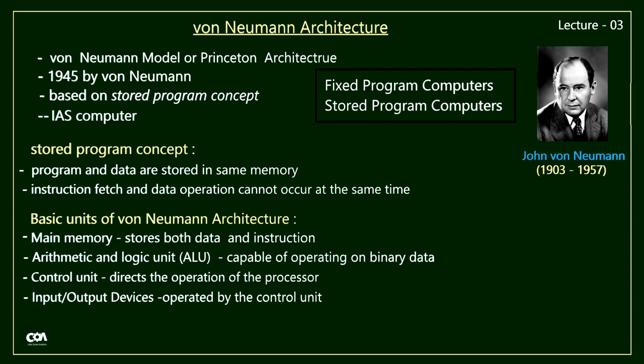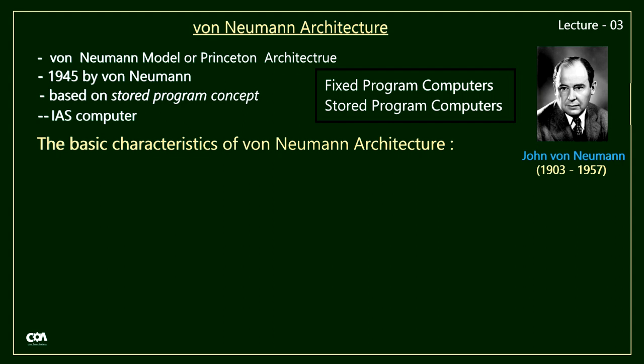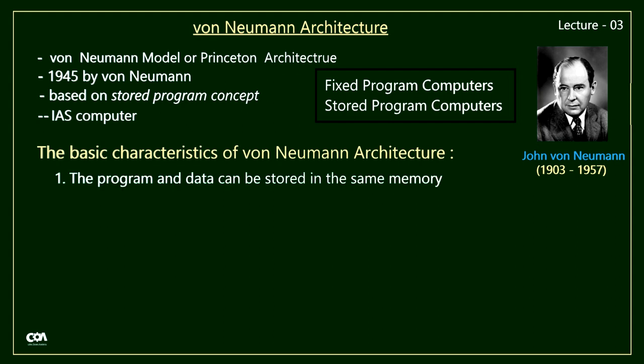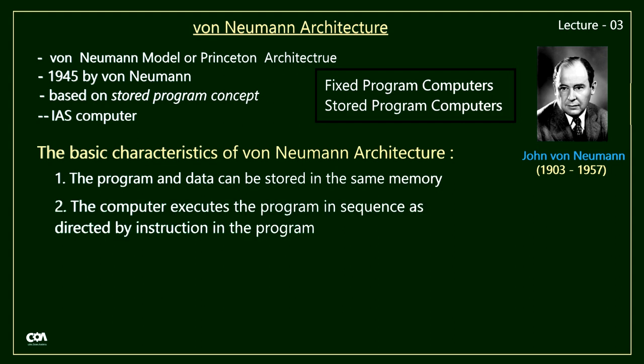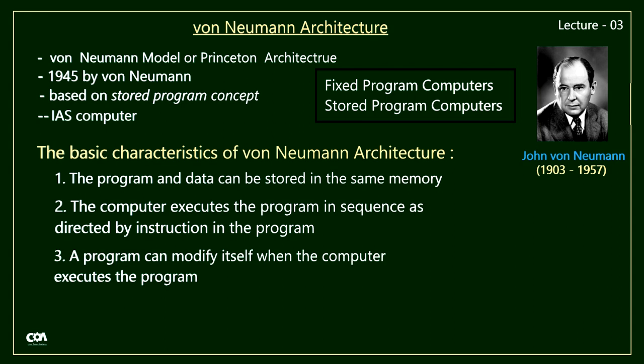The basic characteristics of Von Neumann architecture are: first, programs and data can be stored in the same memory. Second, the computer executes the program in sequence, as directed by the instructions in the program — the sequence followed by the program is determined by how the instructions direct execution. Third, a program can modify itself when the computer executes the programs.